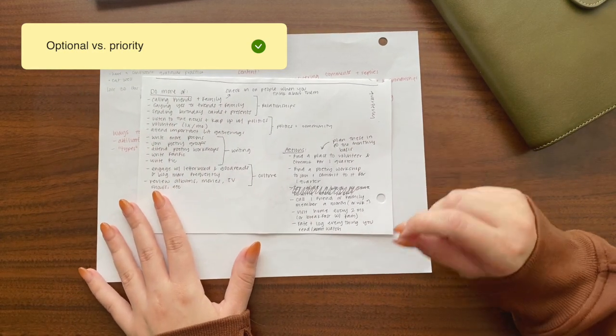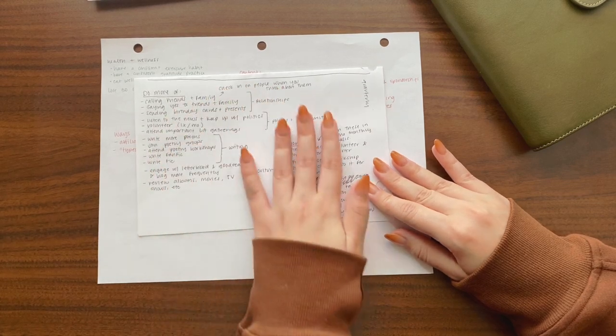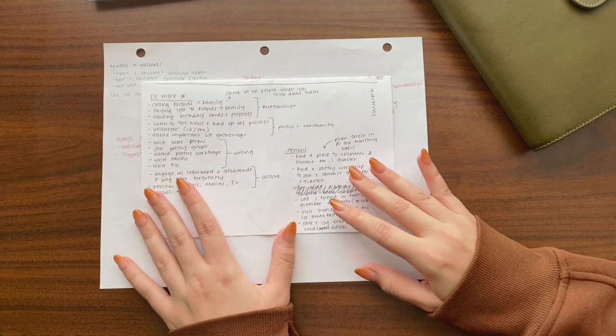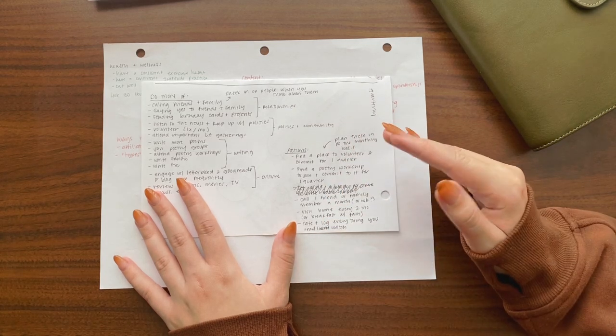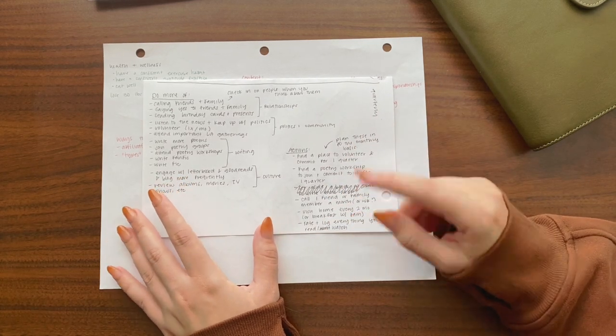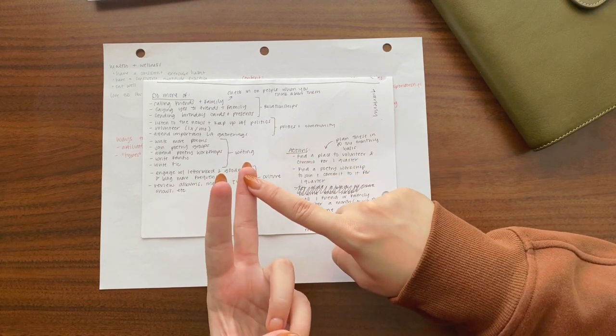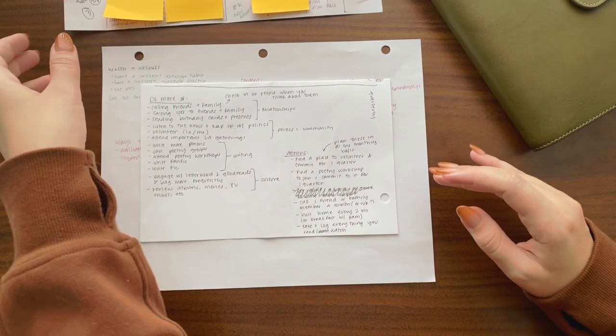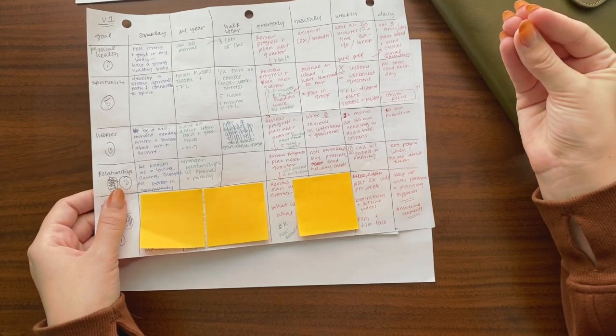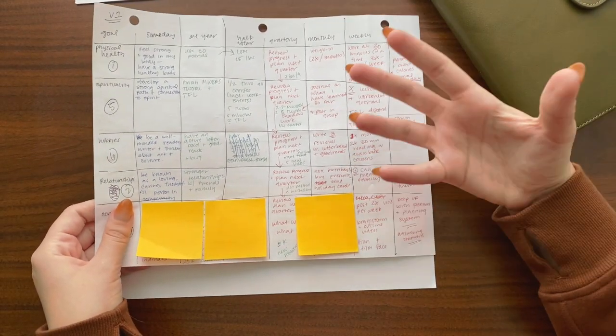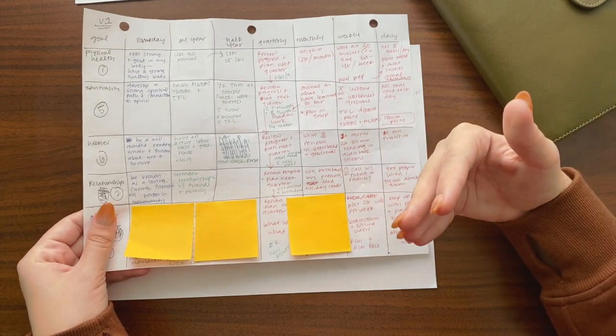I have that here on this piece of paper. It's not very complex, just mapping out a little bit more about those. But the more exciting part is this little sheet. Now this is what I use to take those goals that I knew I was not going to prioritize and distill them down into basic do more of actions and one time off actions.